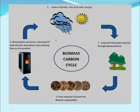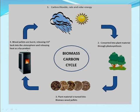This diagram shows that solar energy is converted into plant material through photosynthesis. Wood shavings are turned into biomass wood pellets. When these wood pellets are burned, they release carbon dioxide back into the atmosphere and release heat as a by-product. This heat causes gases to move and clouds to form — this is what we call the biomass carbon cycle, because carbon is being converted from one form to another.